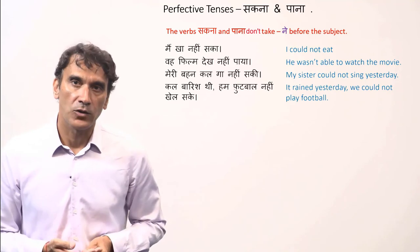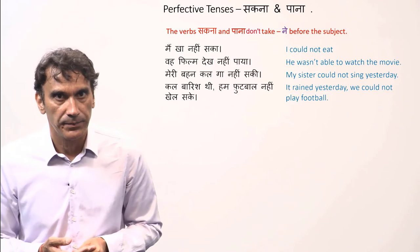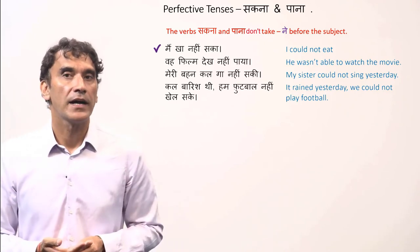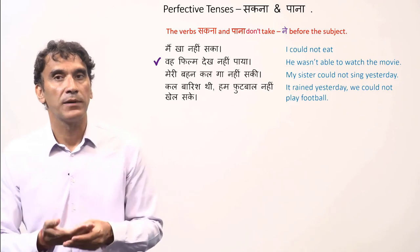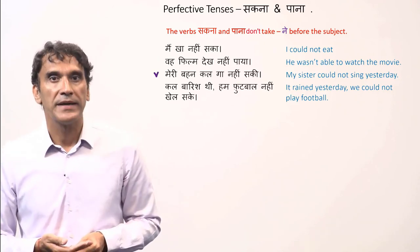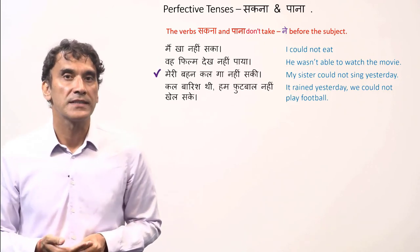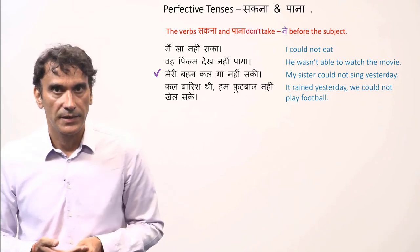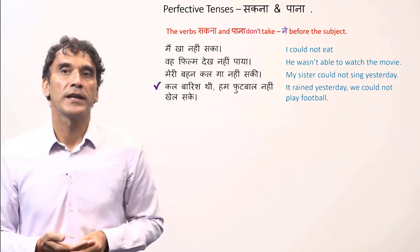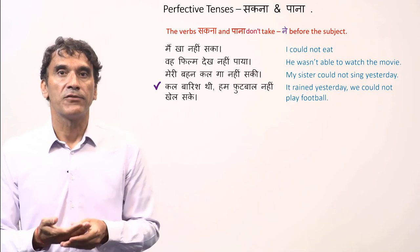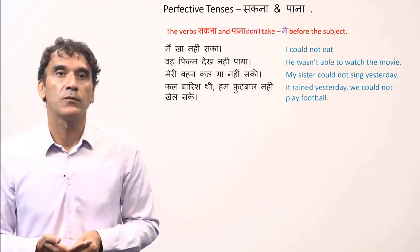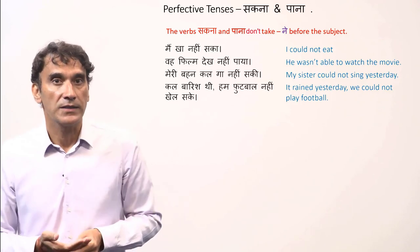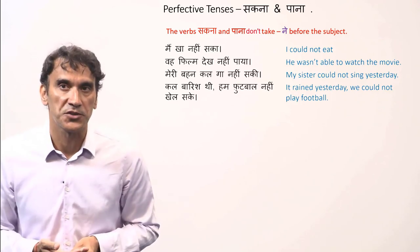Finally, the modal verbs 'sakna' and 'paana' will never take the subject with the postposition 'ne'. 'Maine kha nahi sakha' — I could not eat. 'Wo film dekh nahi paaya' — he wasn't able to watch the movie. 'Meri behen kal ga nahi sakhi' — my sister could not sing yesterday. 'Kal baarish thi, hum football nahi khel sake' — it rained yesterday, we could not play football. Here all the verbs are transitive, but with the modal verbs 'sakna' and 'paana', the subject will not take the postposition 'ne'.